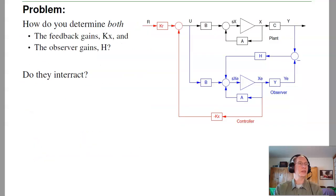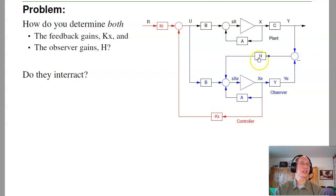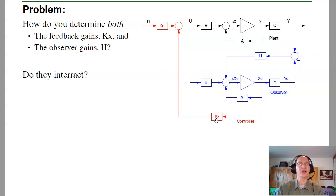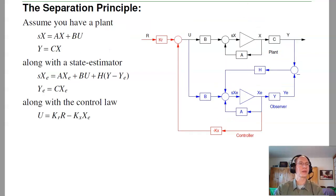But here's the problem: how do you determine both the observer gains and the feedback controller gains? Do they interact? Well, the separation principle says no, they don't.